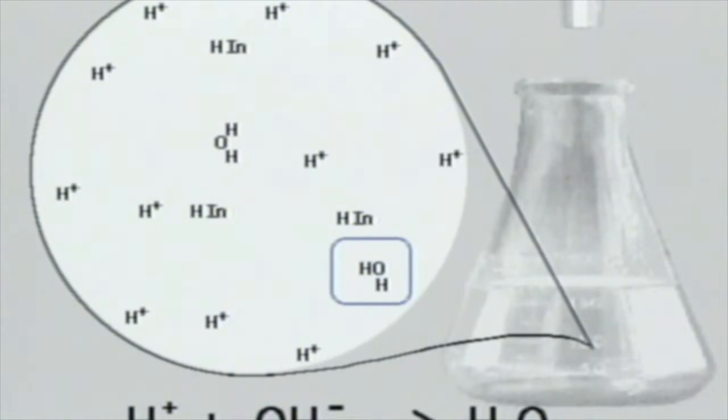At first, we see the titrant reacting with the hydrogen ions in the sample. The reaction produces water from acidic hydrogen ions and basic hydroxide ions.